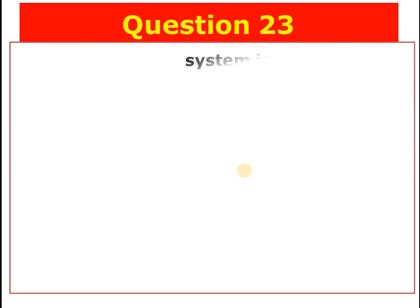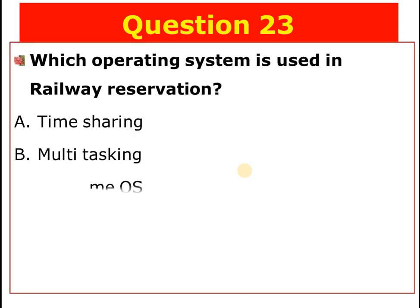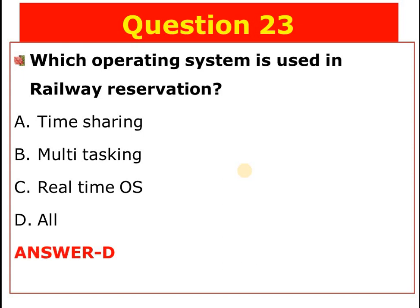Question number twenty-three: Which operating system is used in railway reservation? A) Time-sharing, B) Multitasking, C) Real-time OS, D) All of the above. The answer is D — railway reservation uses time-sharing, multitasking, and real-time operating systems.